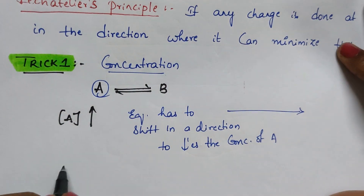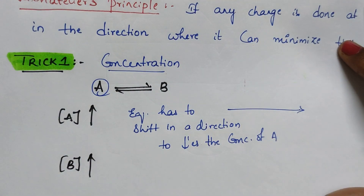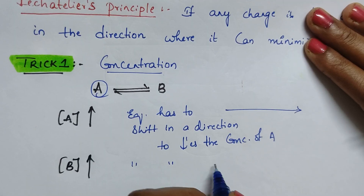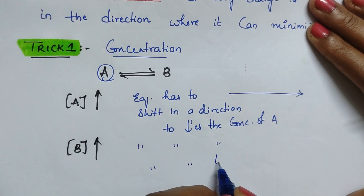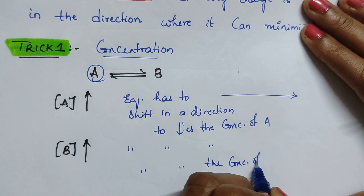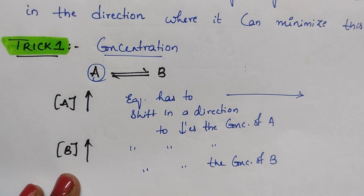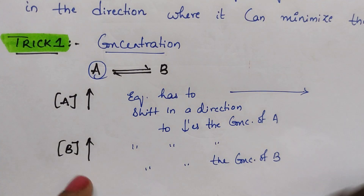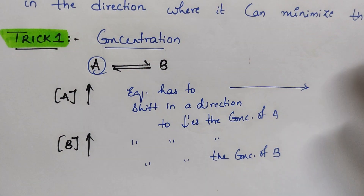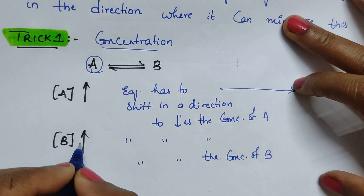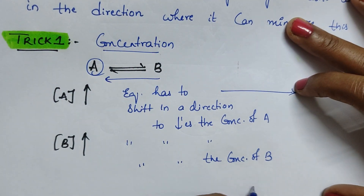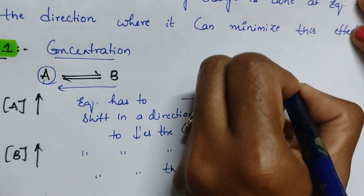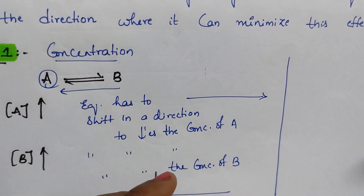If you are increasing the concentration of the product B, then equilibrium has to shift in a direction to decrease the concentration of B. Whatever you are increasing, equilibrium tries to decrease it; whatever you are decreasing, equilibrium tries to increase it — just the opposite. So if you increase the concentration of B, equilibrium shifts backward to decrease its concentration, converting B back into A.